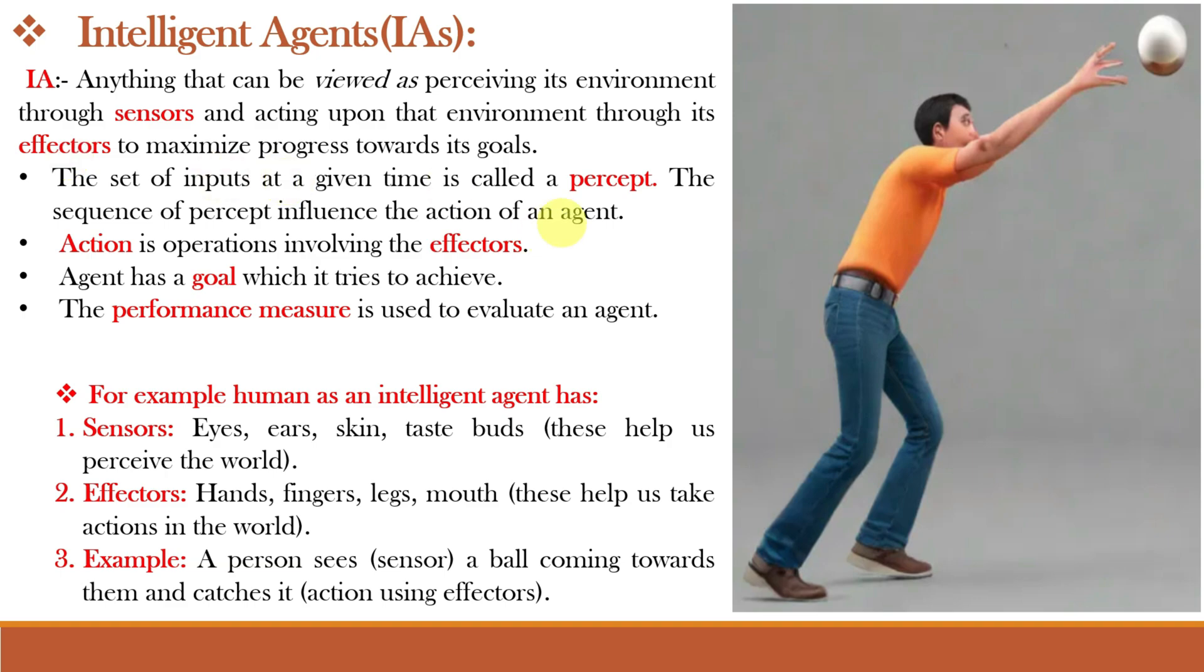The set of inputs at a given time is called a percept. Percept means to grasp or to take, right? So it means the information that an agent receives at any given time from its sensor is a percept. And the sequence of percepts decides the action of the agent. And obviously action is operations involving the effectors. Agent has a goal which it tries to achieve. For example, catching the ball, and the performance measure is used to evaluate an agent. For example, a person sees a ball using sensors that are eyes coming towards it and catches it, which is action done using the effectors that is his hands. Simple to understand, right?